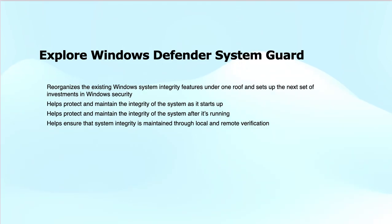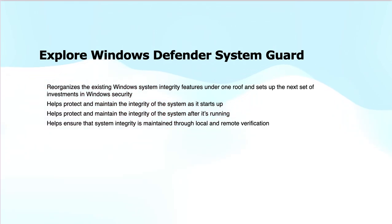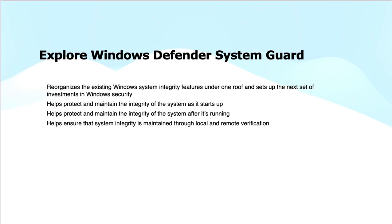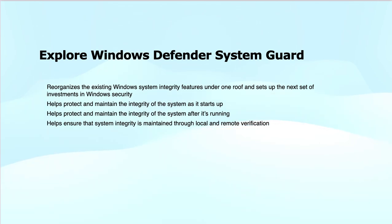The system checks the integrity of the boot process via TPM to confirm that only signed and legitimate code is used. Virtualization-based security (VBS) uses hardware virtualization to create an isolated environment that protects critical system processes and data from being attacked. Hypervisor-enforced code integrity (HVCI) works to ensure that only trusted code runs in kernel mode. The hardware root of trust integrates with TPM 2.0 and secure boot to leverage hardware-based trust and protect against attacks that try to tamper with the system at the firmware level.